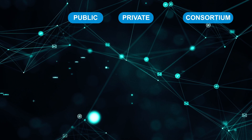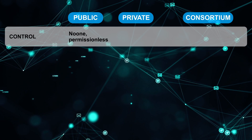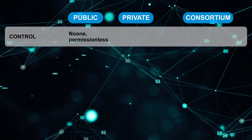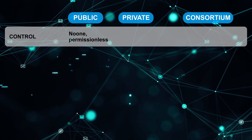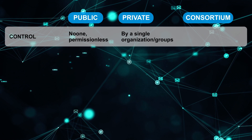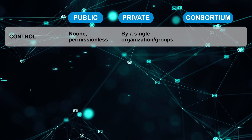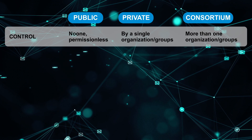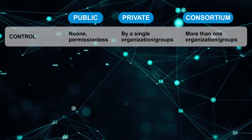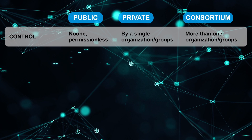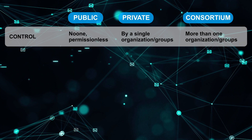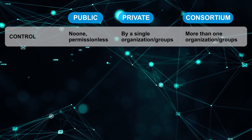Starting with the first point, we have control. In public blockchain, nobody controls it — it is totally permissionless. Whereas in private blockchain, it is controlled by an organization or a group. Similarly, consortium blockchain is an extended form of private blockchain. Instead of being controlled by a single company or organization, more than one company is involved in it.